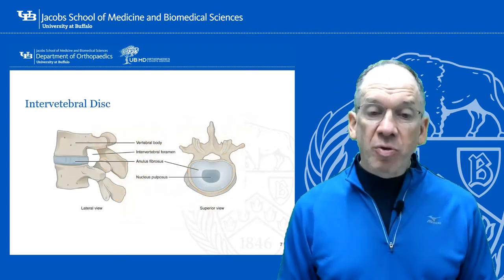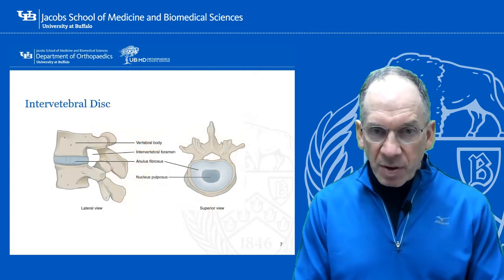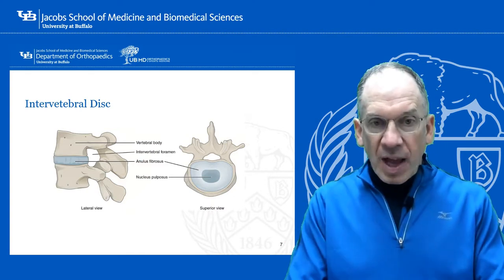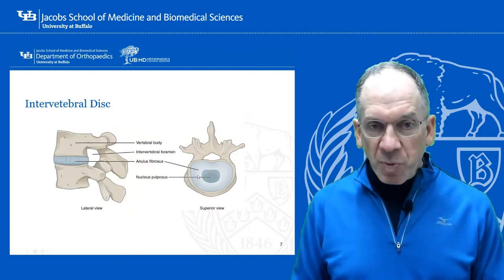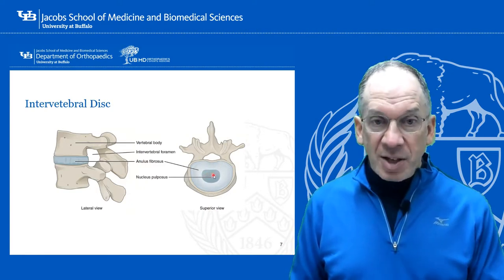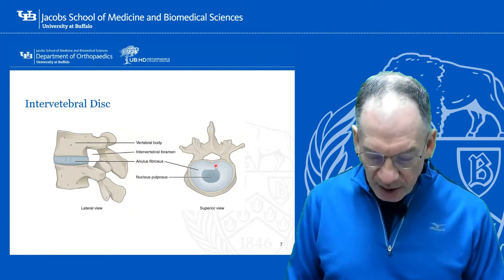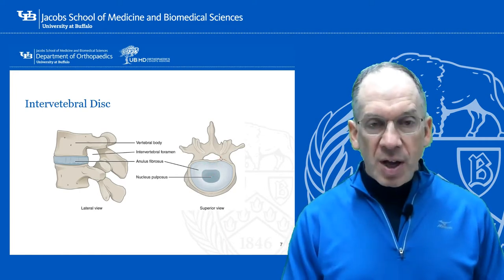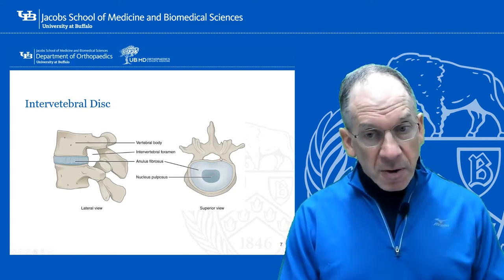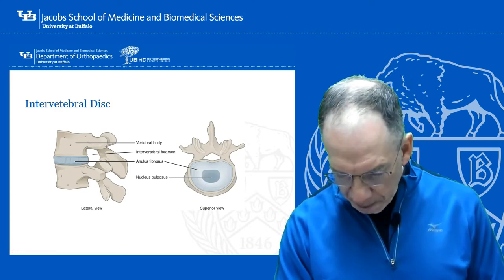The intervertebral disc is basically comprised of two different types of fibers: the annulus fibrosis, which is the outer fibrous ring, and the nucleus pulposus, which is softer. When someone has a disc herniation, it's because the annulus tears and the nucleus pulposus extrudes. Depending on where it extrudes affects what it compresses and what the symptoms are.